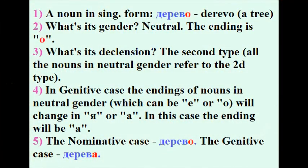Now let's look at all the steps you should pass through to form a noun ending in genitive case. Let's take, for example, a noun in singular form: дерево, a tree. What is the gender? Neutral, because the ending is О. What is the declension? The second type, because all the nouns in neutral gender refer to the second type. In genitive case, the endings of nouns in neutral gender — which can be Е or О — will change to Я or А. In this case the ending will be А. So in the nominative case the word sounds as ДЕРЕВО, and in the genitive case it will sound as ДЕРЕВА.